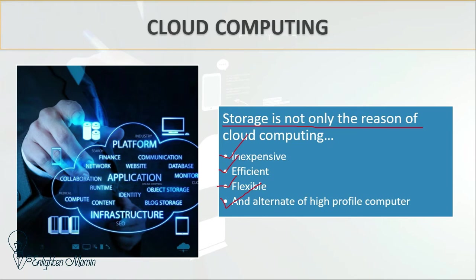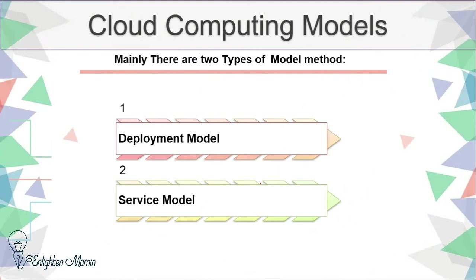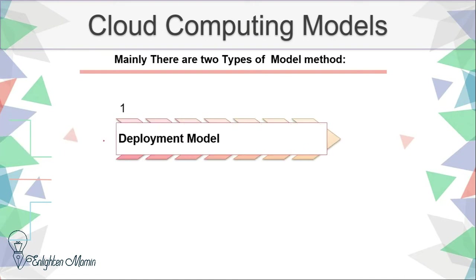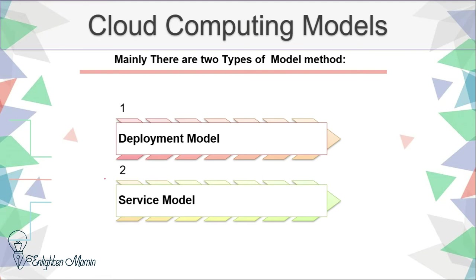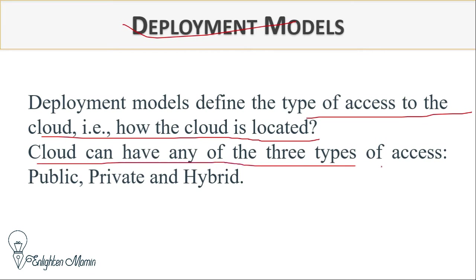Cloud computing models — there are mainly two types: the deployment model and the service model. The deployment model defines the types of access to the cloud — how the cloud is located. A cloud can have any of three types of access: public, private, and hybrid.